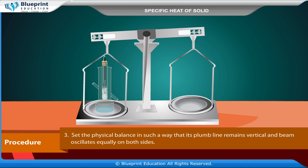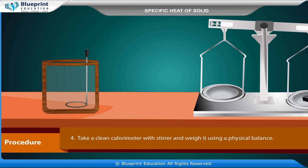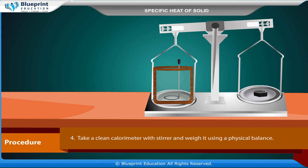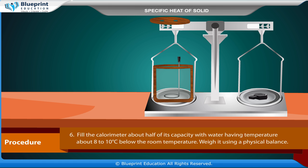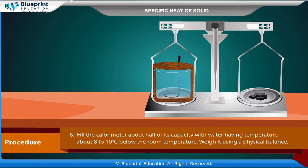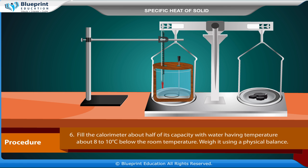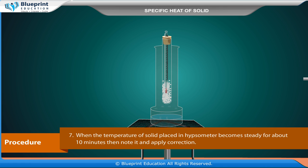Set the physical balance so that its plumb line remains vertical and the beam oscillates equally on both sides. Take a clean calorimeter with stirrer and weigh it using a physical balance. Put a lid over the calorimeter and weigh it. Fill the calorimeter about half its capacity with water having temperature about 8 to 10 degrees Celsius below room temperature and weigh it. When the temperature of the solid in the hypsometer becomes steady for about 10 minutes, note it and apply correction.